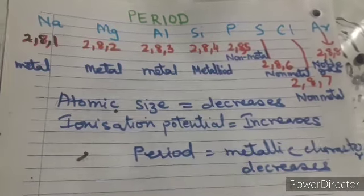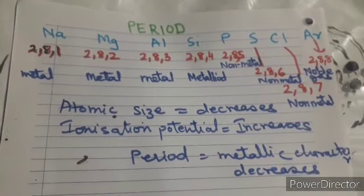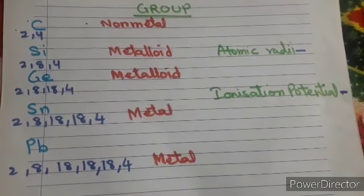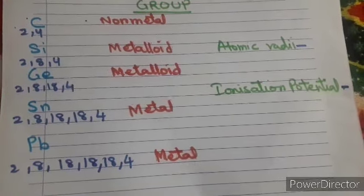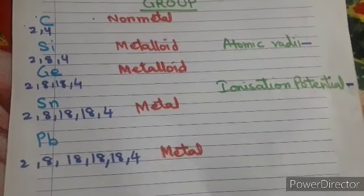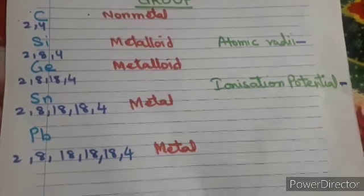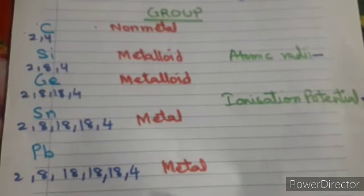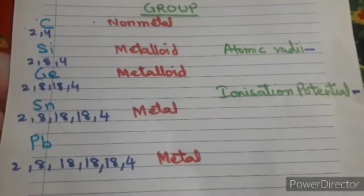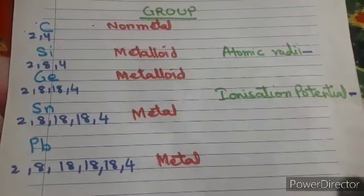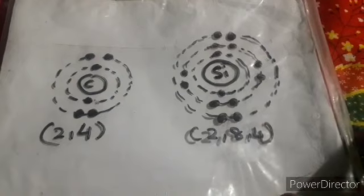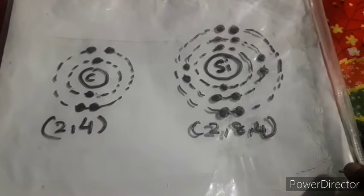Now we will focus on how metallic character varies in a group. I have written a group — it is Group 14 — and all the elements with their electronic configurations and natures: carbon is a non-metal, silicon and germanium are metalloids, and tin and lead are metals. We will see how the two factors — atomic radii and ionization potential — affect metallic character in a group.